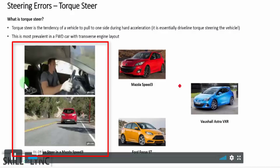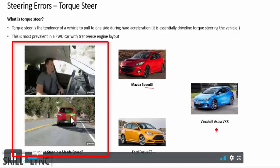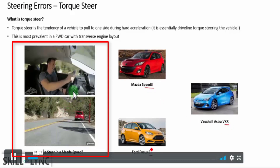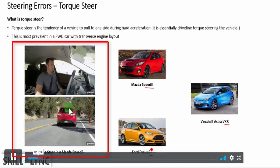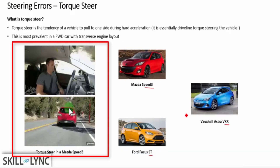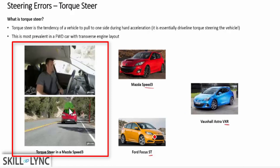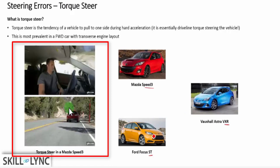For example, if you see here in this animation, you can see that the car automatically tends to move towards the right, even though there is no steering input. And this is what you call torque steer. In this case, this is happening during hard acceleration. Sometimes you can also see this happening if your road conditions are not optimal.